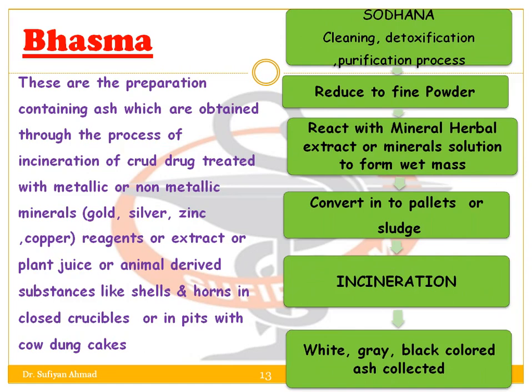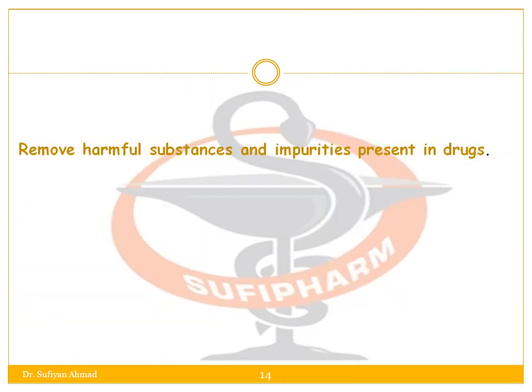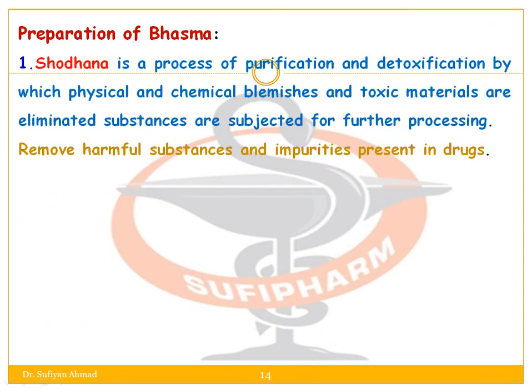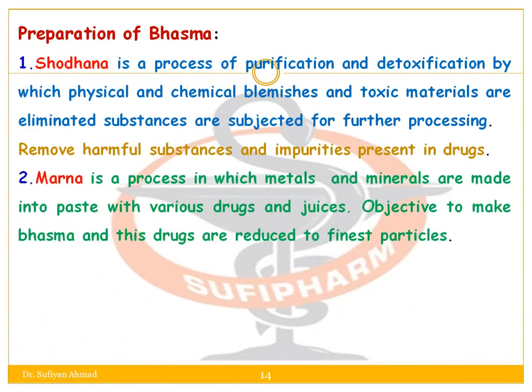In the preparation of Bhasma, there are three steps. First is Shodhana — the process of purification and detoxification by which physical and chemical impurities and toxic material are eliminated, and substances are subjected to further processing for removal of harmful substances. Second is Marana — the process in which metals and minerals are made into a paste with various drugs and juices, with the objective of making Bhasma, reducing the drug to the finest particles.